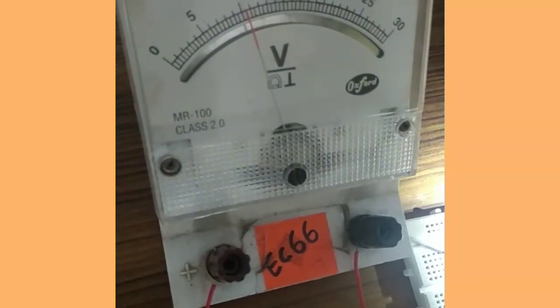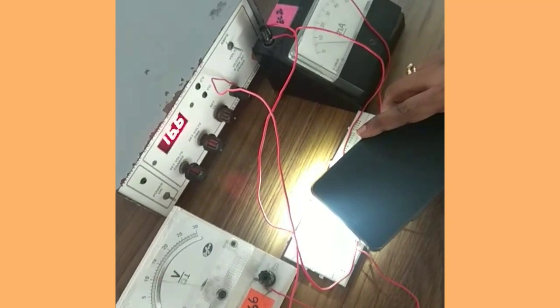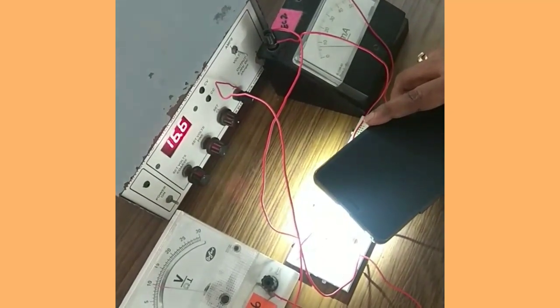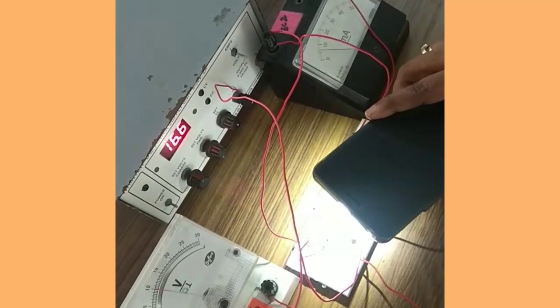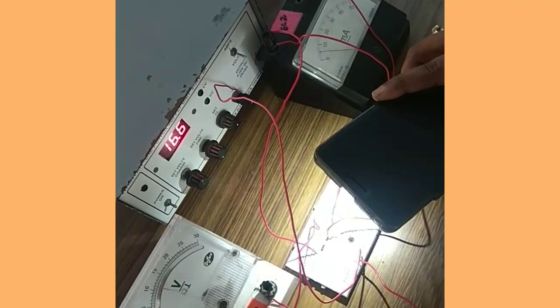You need to note down both the voltmeter and ammeter readings. As I increase the distance of the light source from the LDR, you can see the current slowly decreases and the voltage drop increases.